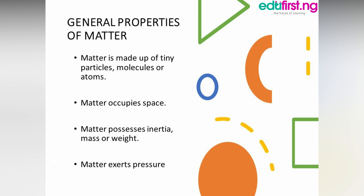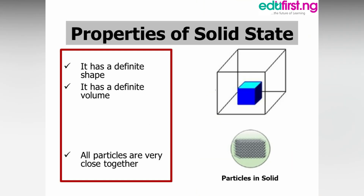Now I'm going to take the properties of phases of matter one by one, starting with properties of the solid state. One, it has a definite shape — that is its own shape; it does not depend on the container. Two, it has a definite volume. Three, all particles are very close together.